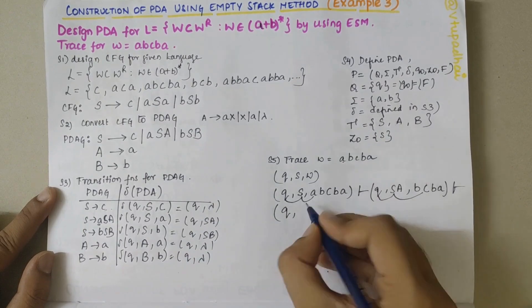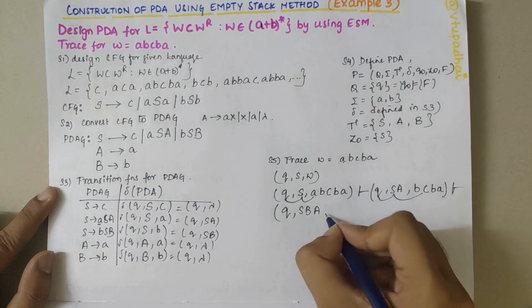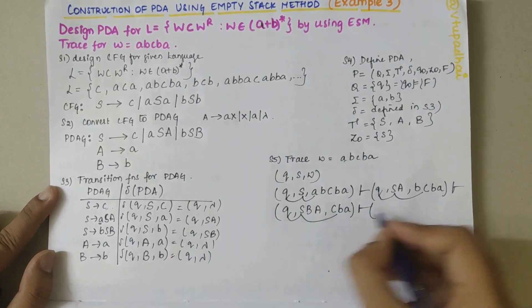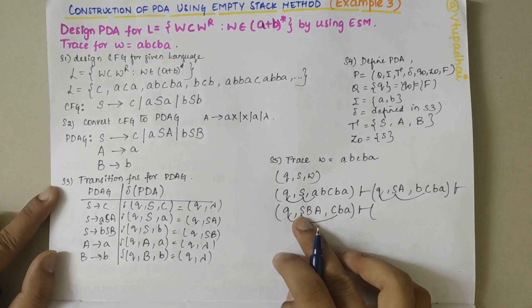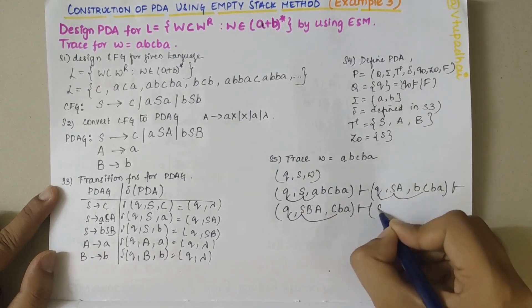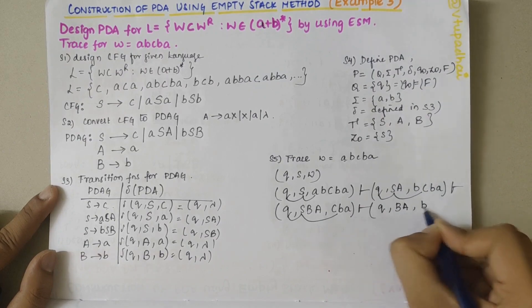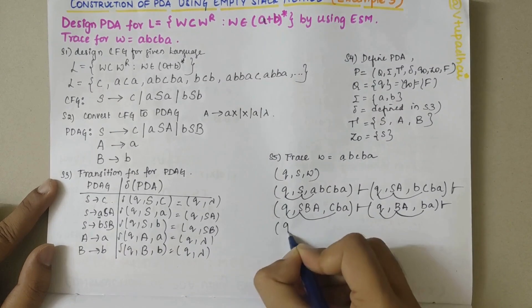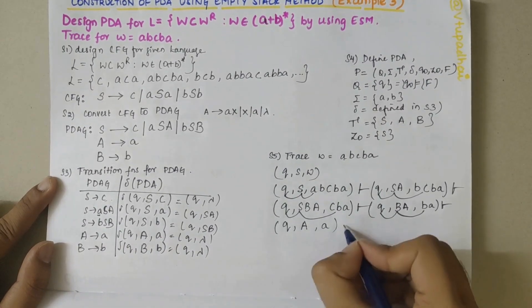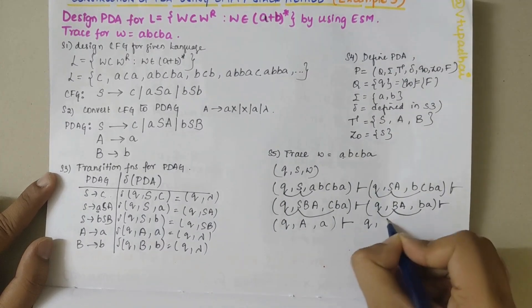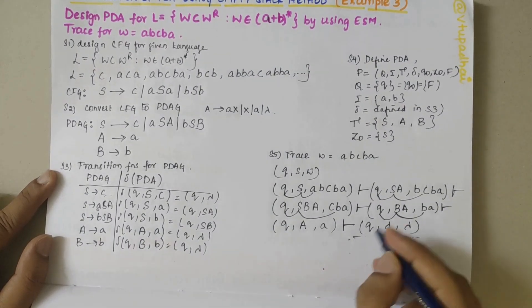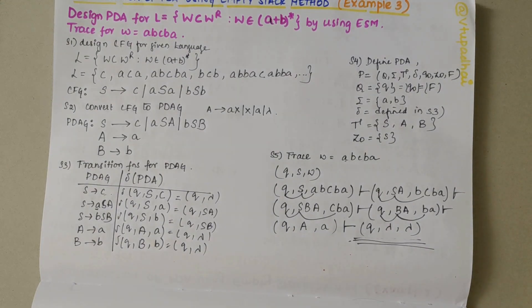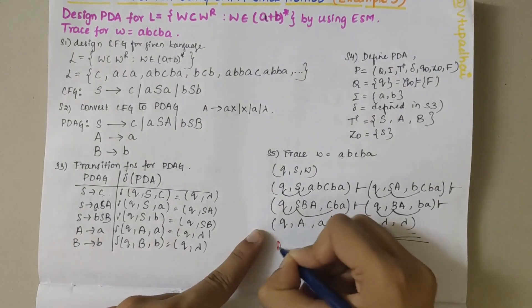Continuing: δ(Q, B, B) gives lambda, so we get (Q, A, A). Then δ(Q, A, A) gives lambda, so we get (Q, λ, λ). Whenever we reach the empty stack state in the empty stack method, the given string is accepted. The string ABCBA is accepted by this PDA.